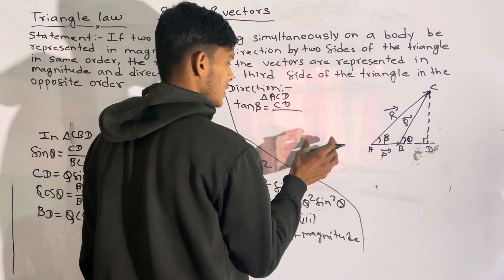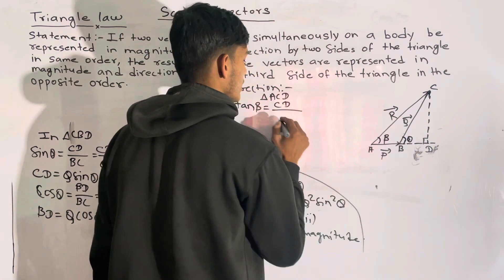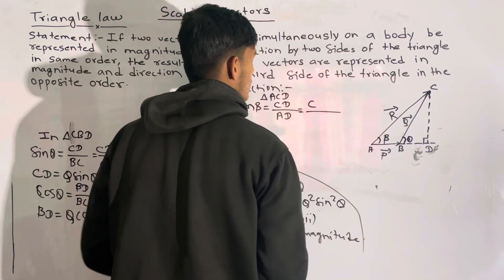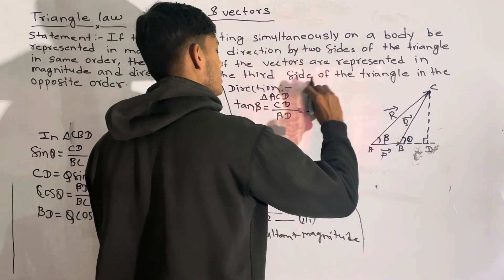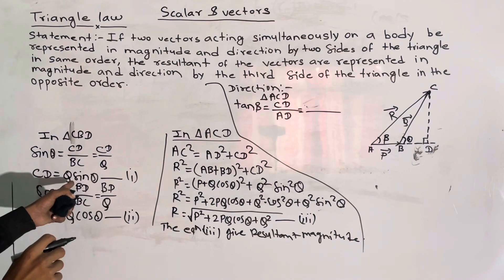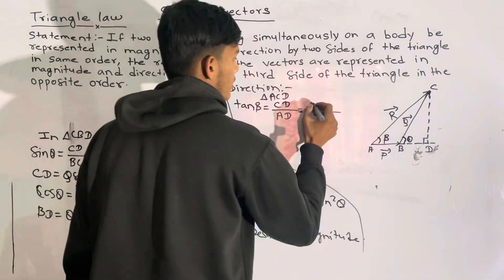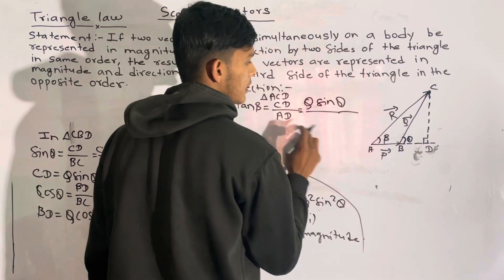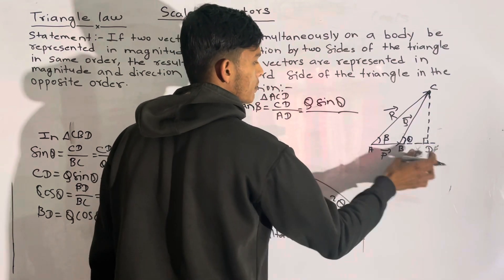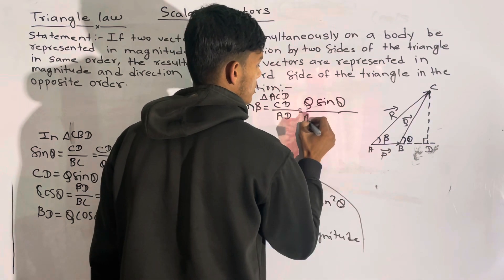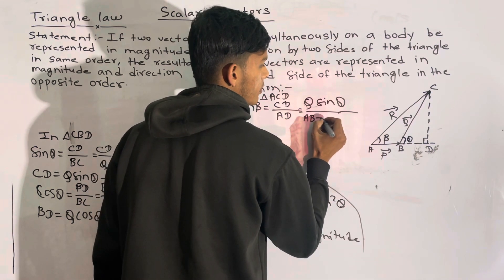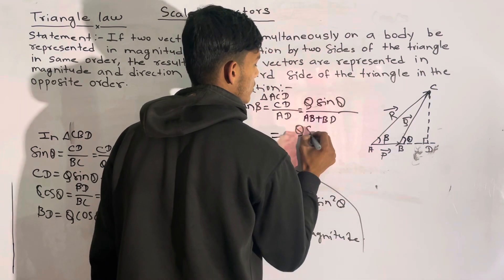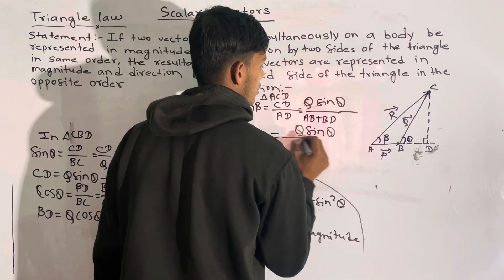For the direction, CD is equal to Q sin theta, and AD is equal to AB plus BD. So the direction of the resultant can be determined from these components.